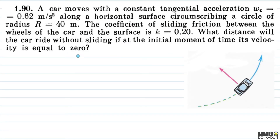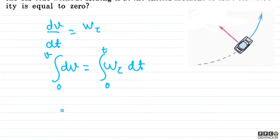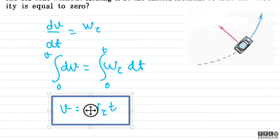Bachon, this is a big question. The initial speed of the car is 0, and it has tangential acceleration which is constant: w_τ. So what do we have to say? dv/dt is equal to w_τ. So here we have dv = w_τ·dt, and integrating we get v = w_τ·t, since w_τ is constant.